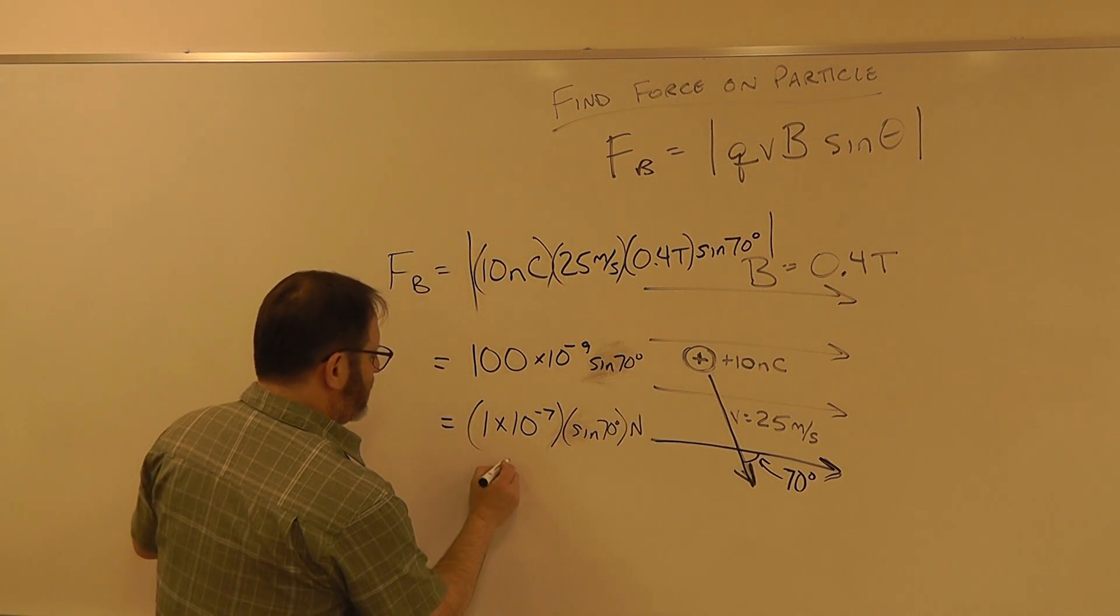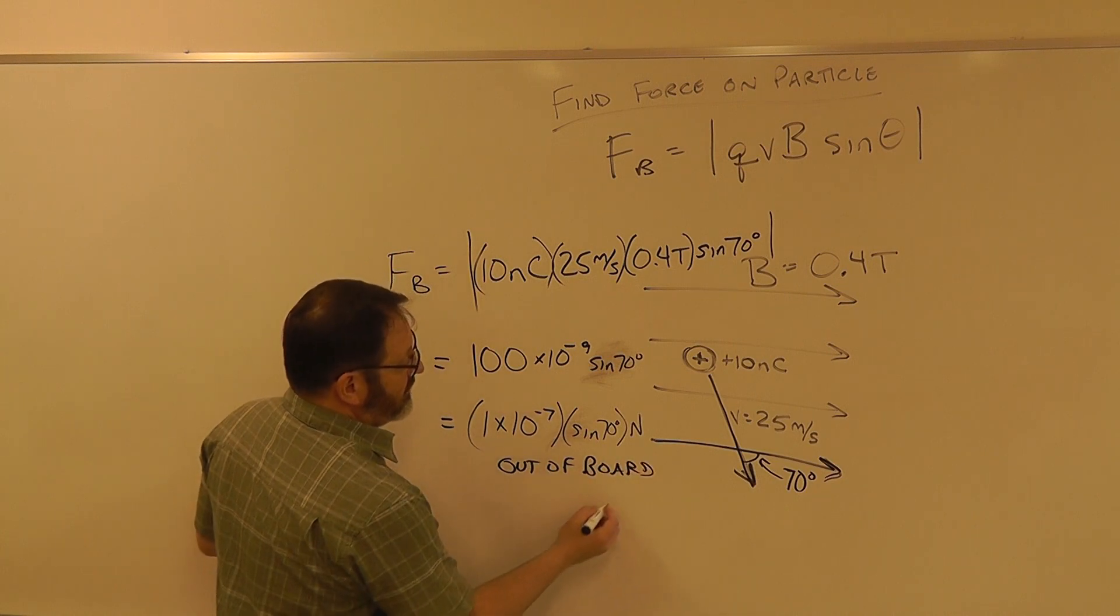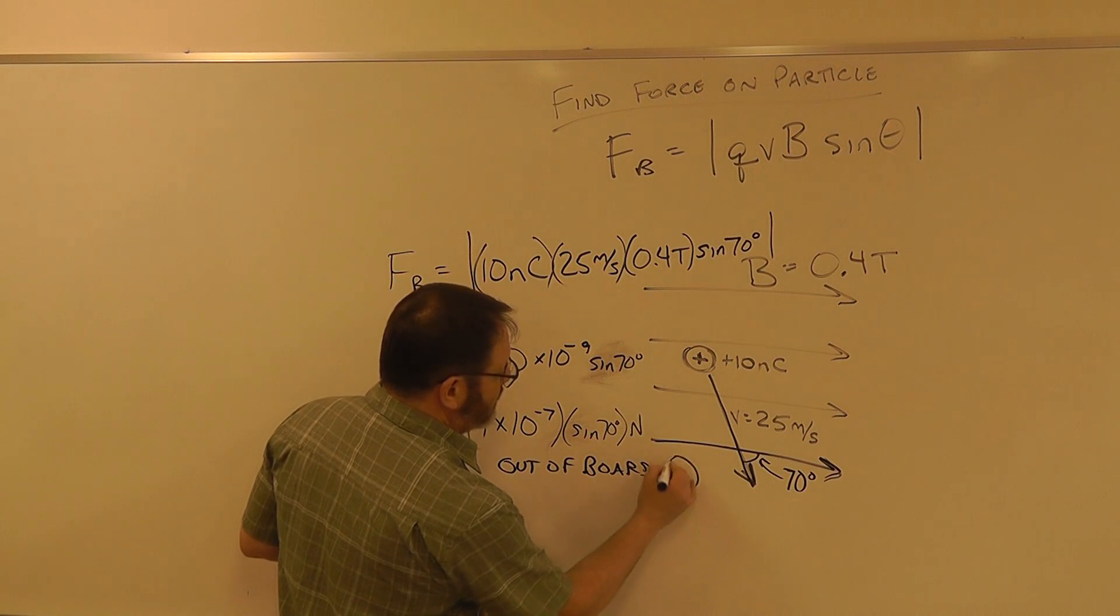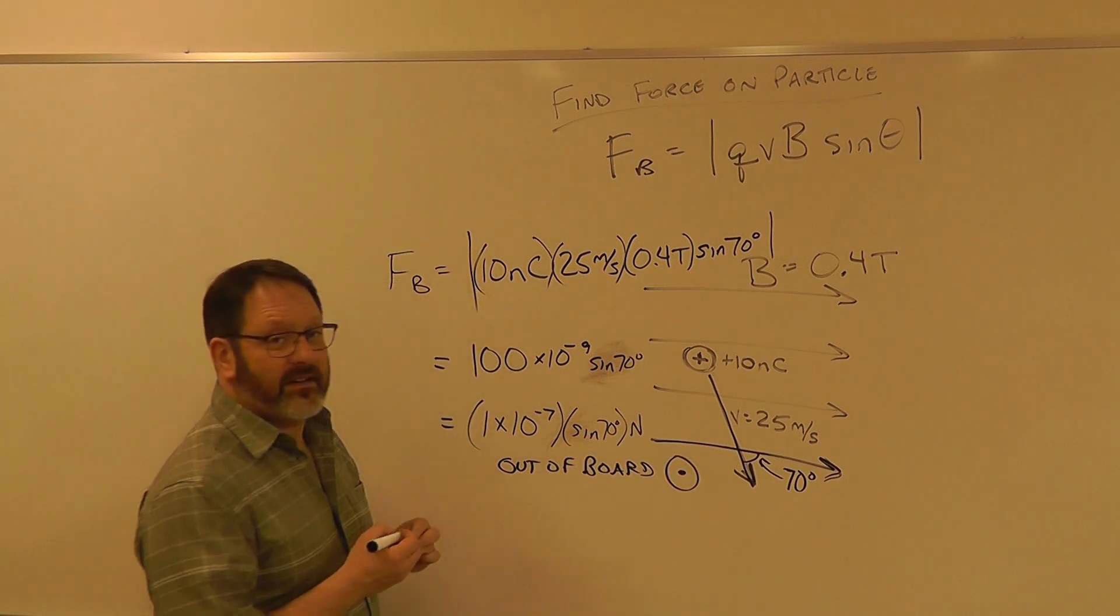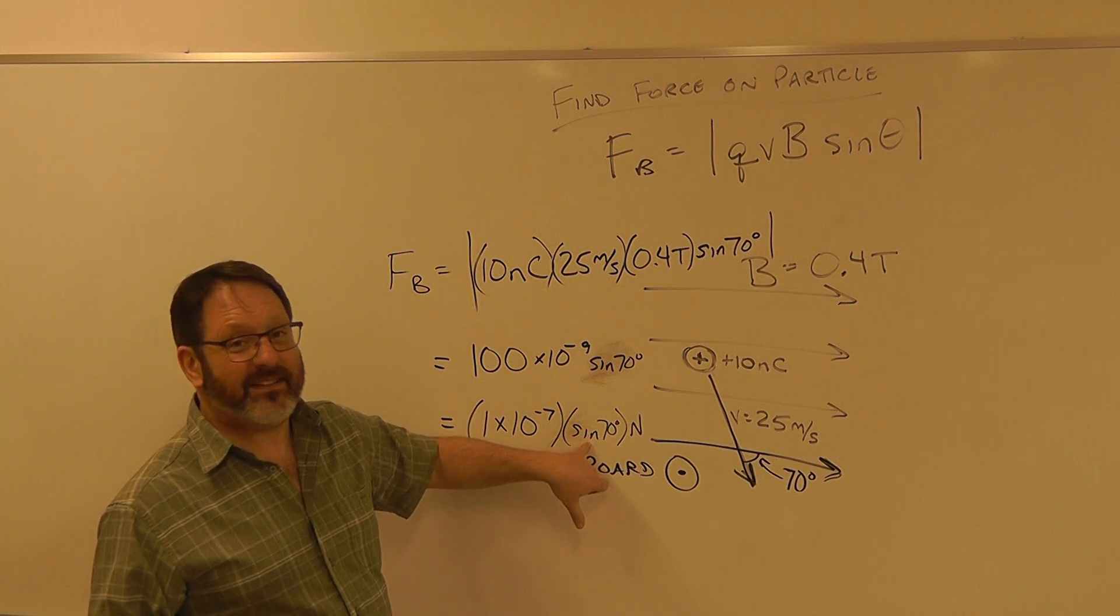Out of the board, or a better way to write out of the board is an arrow pointing straight out. So there you go, whatever 1 times 10 to the minus 7 times sine 70 is, that's newtons out of the board.